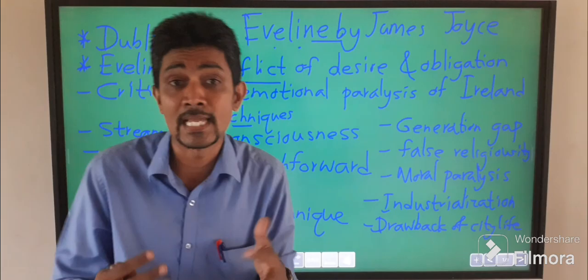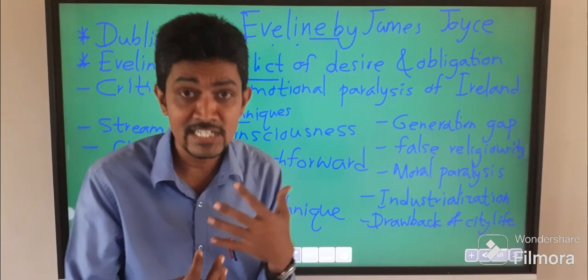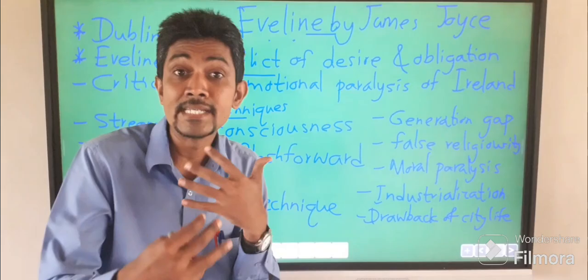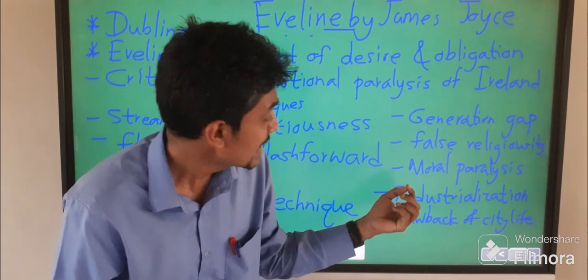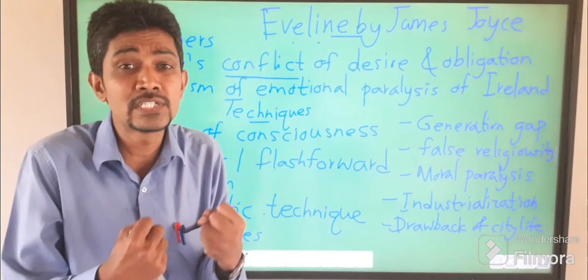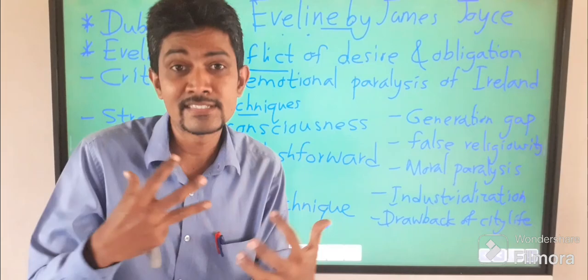When it comes to this short story, there is a generation gap — between adults and younger generations. You can see this generation gap clearly. There is also false religiosity: sometimes we see pictures being worshipped, and that is about false religiosity in this short story. And moral paralysis — as mentioned earlier, the people do not have the necessary power to make decisions, so they have moral paralysis.